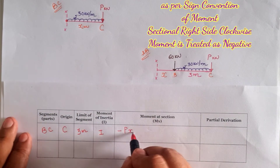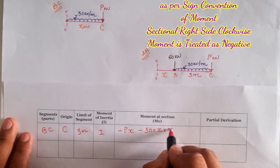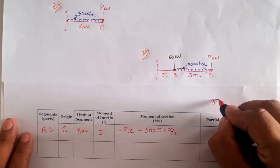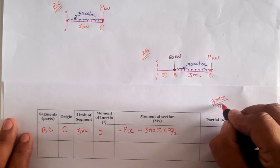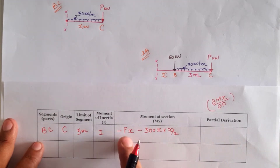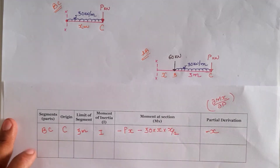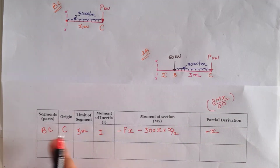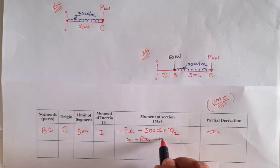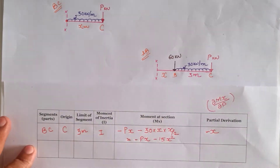The moment expression is: M(x) = −Px − 30·x·(x/2) = −Px − 15x². The partial derivative for deflection is ∂M(x)/∂P. From the term −Px, the derivative is −x; from −15x², the derivative is 0. So for the B to C segment, the moment is −Px − 15x² and the partial derivative ∂M/∂P is −x.